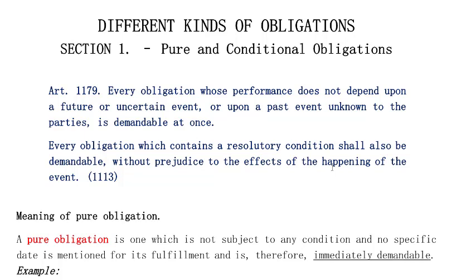If we have to read exactly what is under the provisions of Article 1179, according to 1179, as to pure obligations — section one covers pure and conditional obligations. Article 1179 says: every obligation whose performance does not depend upon a future or uncertain event, or upon a past event unknown to the parties, is demandable at once.